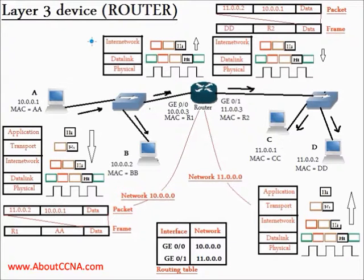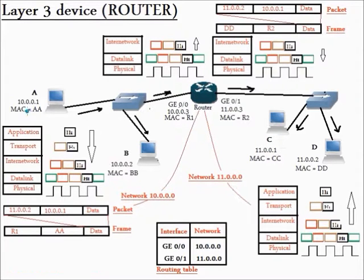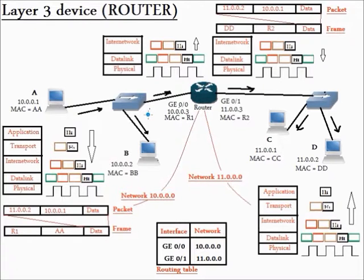In this example, we have two networks: network 10.0.0.0 and network 11.0.0.0. In the first network 10.0.0.0, we have computer A with IP address 10.0.0.1 and MAC address AA, and computer B with IP address 10.0.0.2 and MAC address BB, and the router's interface Gigabit Ethernet 0/0 with IP address 10.0.0.3 and MAC address R1, and a hub which connects the three components with each other.